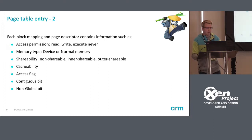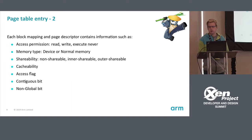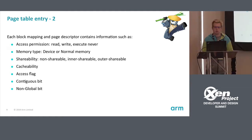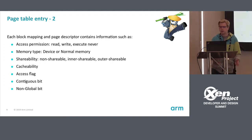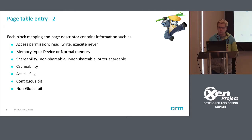In each page table entry, each entry describes roughly how you access the memory: access permissions (read, write, execute-never so if you don't want to execute something), the memory type (device or normal memory), shareability (how it is accessed across the platform with other CPUs or devices), cacheability (if it can be cached, if it cannot, write-back, etc.), access flag (telling you whether the page has been accessed), contiguous bit, and non-global bit — I will go into those a bit later.